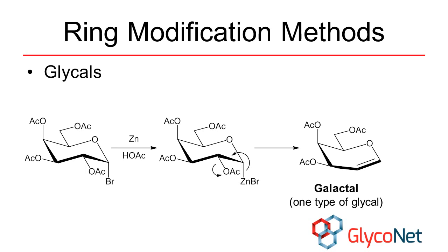The zinc inserts into the carbon-bromine bond and then reductively eliminates, along with acetate, to form the alkene. Much like other alkenes, glycals can undergo many types of addition reactions.